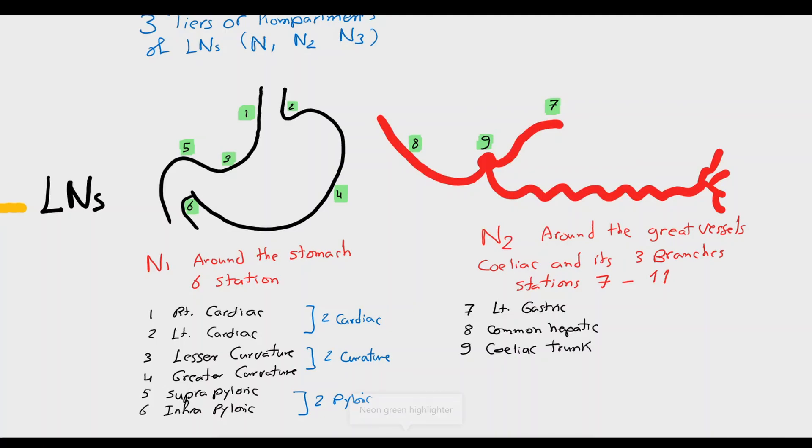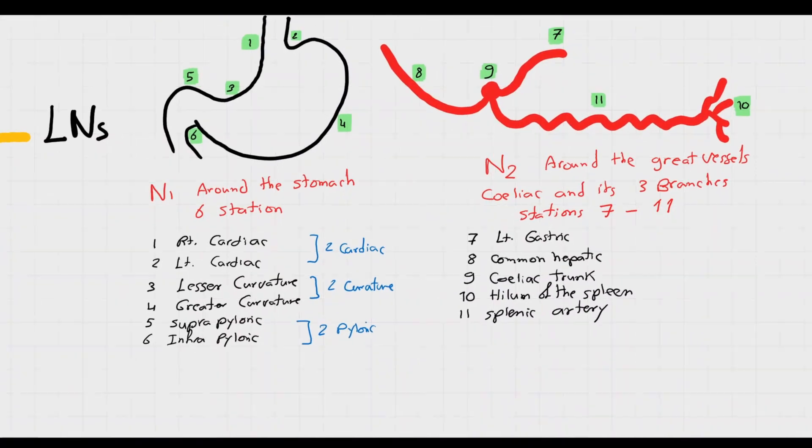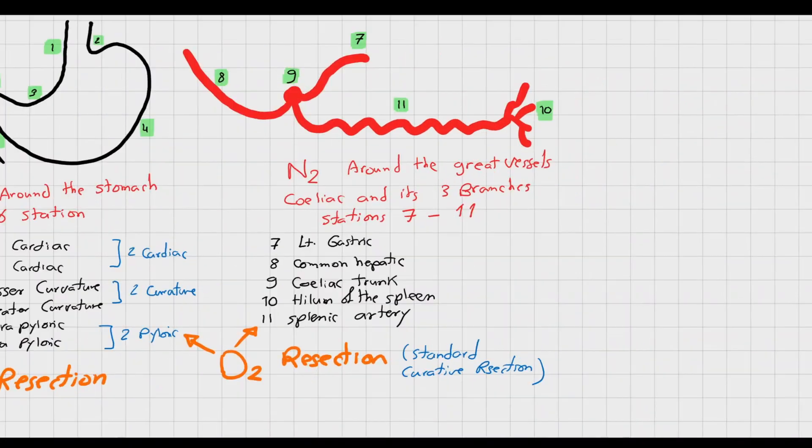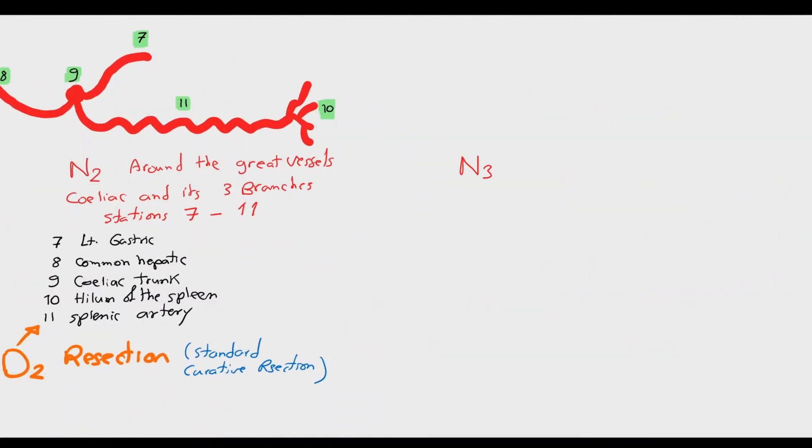From the surgical point of view, there is D1 resection which means resection of the stomach en-bloc with the first six stations of lymph nodes, directly around the stomach. D2 resection is the resection of lymph nodes 1 to 11, the first two tiers. This is now the standard curative maneuver.